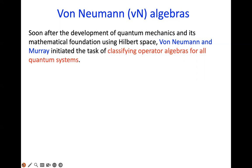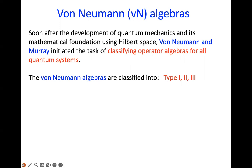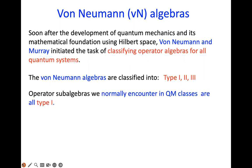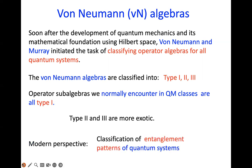These so-called von Neumann algebras are classified into three types — Type I, Type II, and Type III — with further subtypes. The ones we learn in quantum mechanics classes are all Type I algebras. Type II and Type III are more exotic. From the modern perspective, what von Neumann and Murray were doing was essentially the classification of entanglement patterns of quantum systems. Their classification provides a powerful way to understand entanglement patterns.